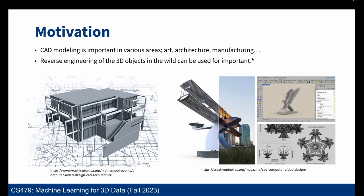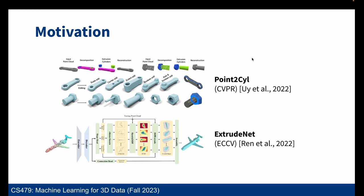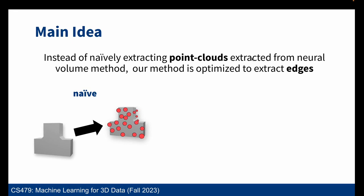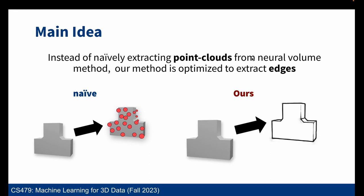Prior research in CAD recovery has focused on reconstructing CAD from point clouds, which might require an expensive LiDAR system to capture. Our method instead tries to directly predict geometry from given multiview images. While we could naively extract point clouds from NeRF-based volume reconstruction methods, the obtained point cloud is only an unreliable proxy that might add additional noise. Our method directly learns edge geometry, which is a much stronger prior for reconstruction.